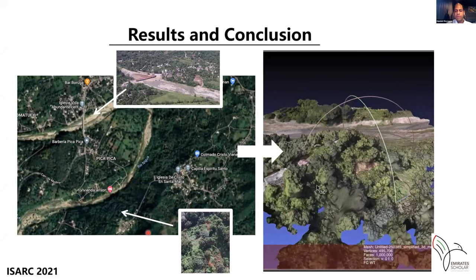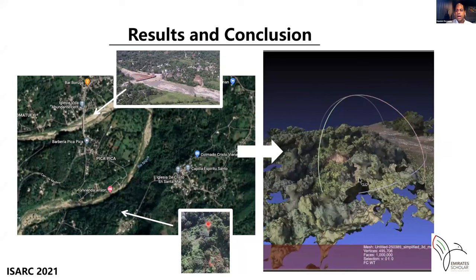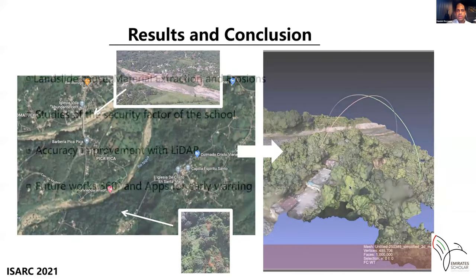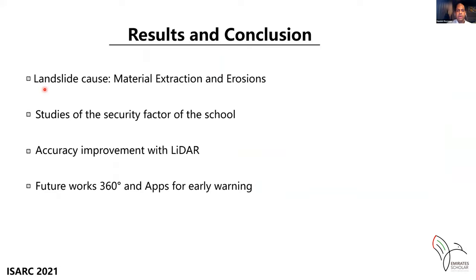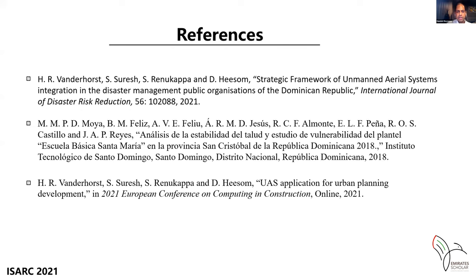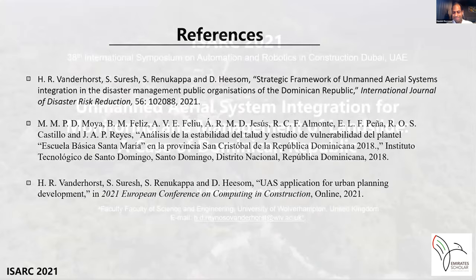The final conclusion was that, because a bridge was being constructed on the opposite side, the landslide problem was caused by material extraction and soil erosion. After evaluating the different structures in the area, they identified that the school required a security factor assessment. Future work includes improving accuracy with additional sensors such as LiDAR for more precise geometric measurements, and developing 360-degree camera apps for early warning systems. Thank you.